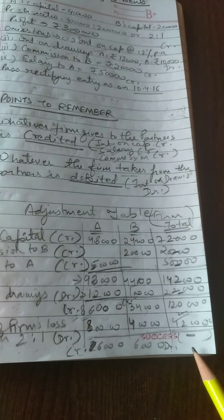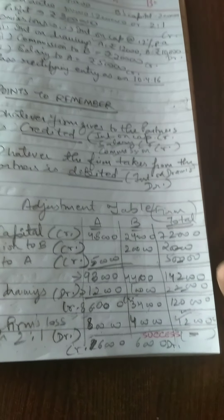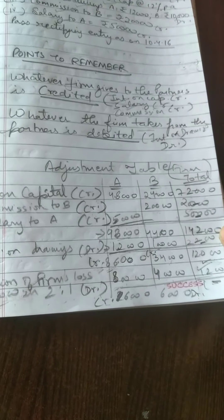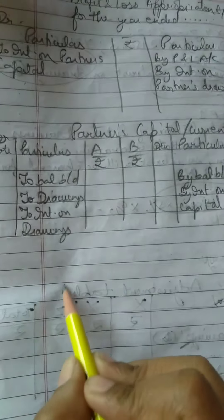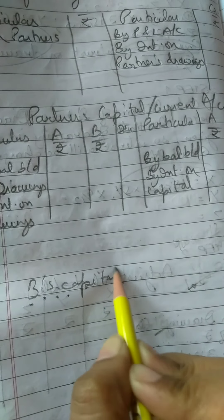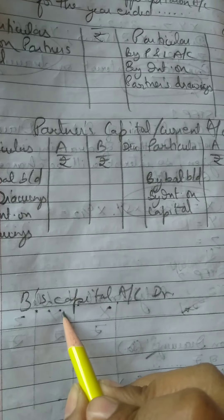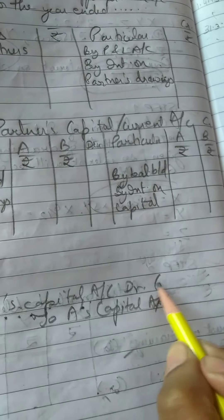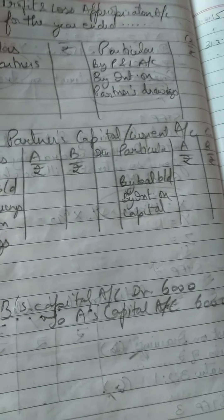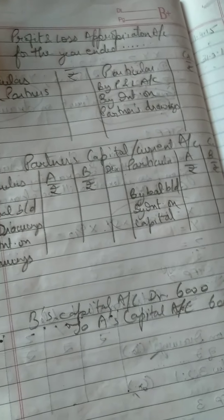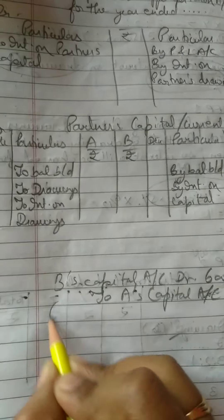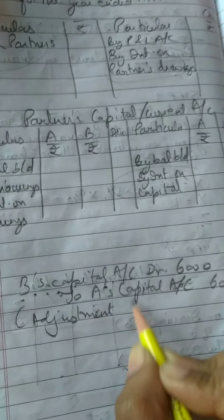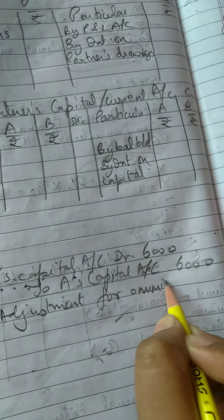The journal entry or adjustment entry to be passed is: B's capital account debit to A's capital account, with the amount rupees 6,000 each. The narration to be written is: 'Adjustment for omissions.' This is the adjustment entry you are going to pass for all such questions.